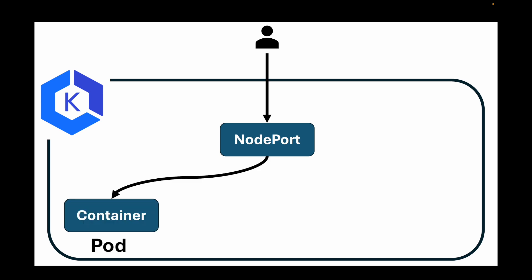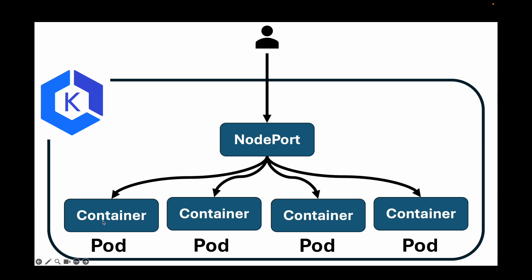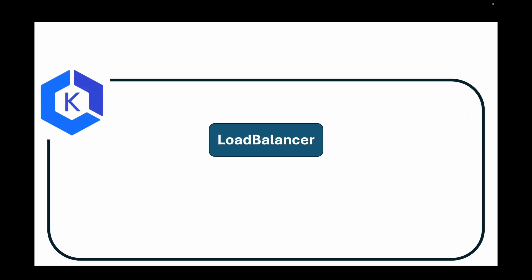Next we have the NodePort service, which is what we used in the last session. With this service a physical port is opened up on the underlying node where the pod is running. If I have four pods running on four different nodes, a port gets opened on each respective node machine. The Kubernetes control plane assigns this port value from a specific range. You can also set up an external basic load balancer to proxy traffic to the open ports on your nodes. As a user you hit the port number opened on the node, and the request goes to the NodePort service which sends it to the respective pods.